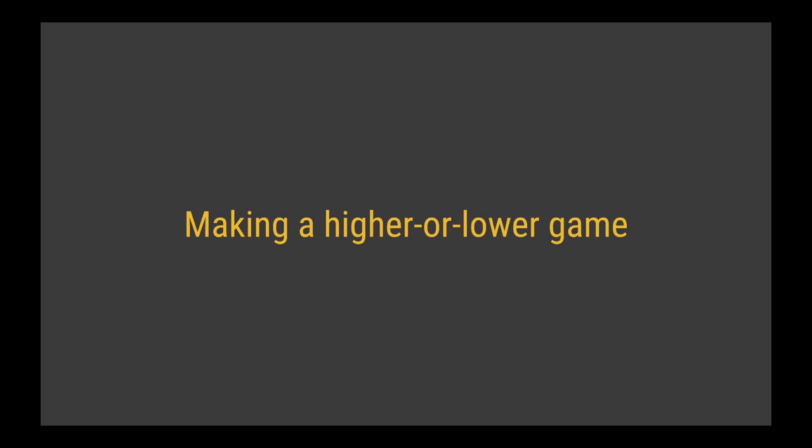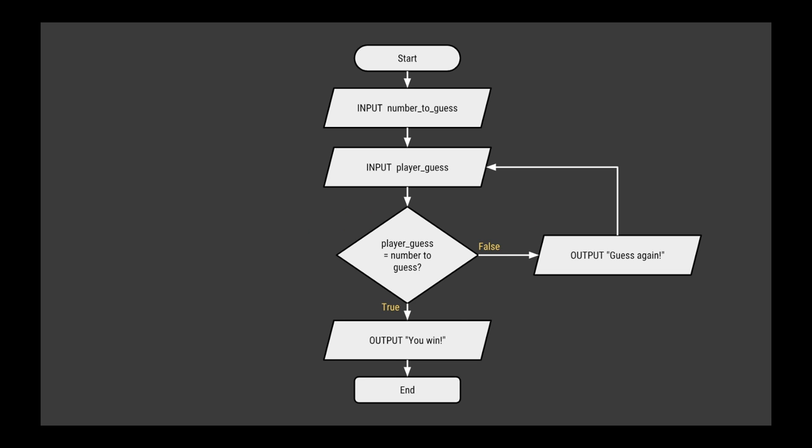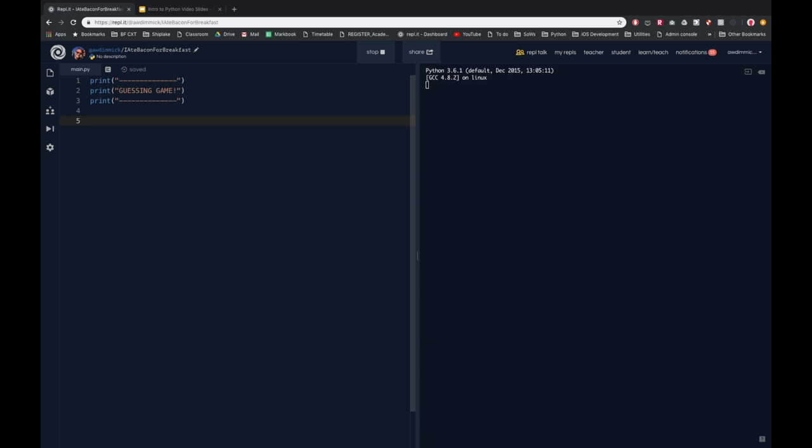Rather than making a boring calculator, we're going to make a higher or lower guessing game. At the start, one player inputs a number for the other player to guess. Then we start a loop where the second player enters a guess. If it's not correct we output 'guess again'; if it's correct we output 'you win' and the game is over. Every time the guess is incorrect it goes back round in a loop until eventually they win.